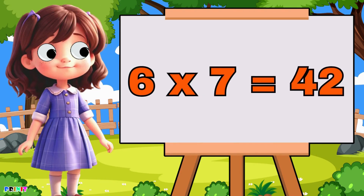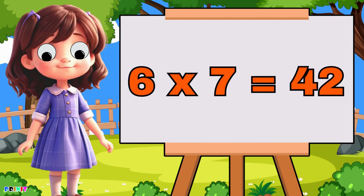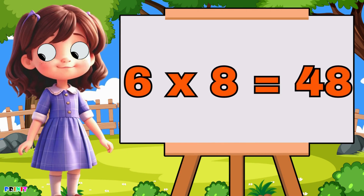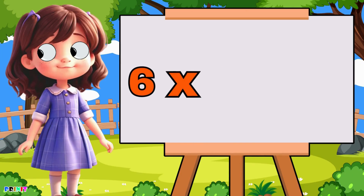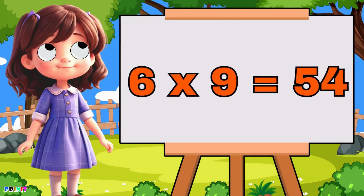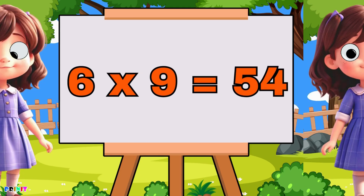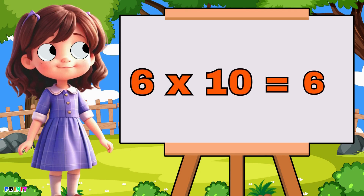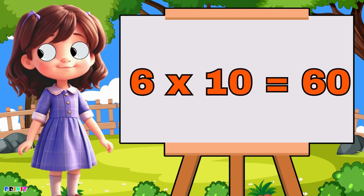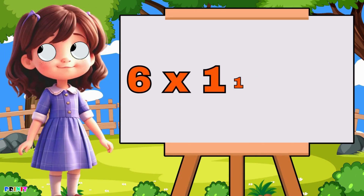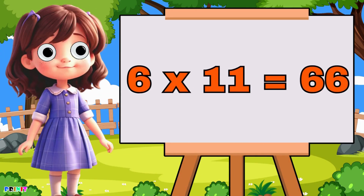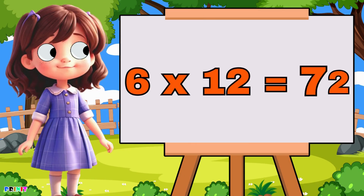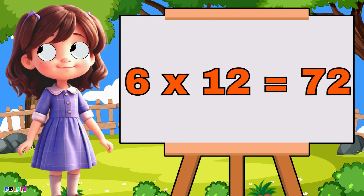Six seven's are forty-two, six eight's are forty-eight, six nine's are fifty-four, six ten's are sixty, six eleven's are sixty-six, six twelve's are seventy-two.